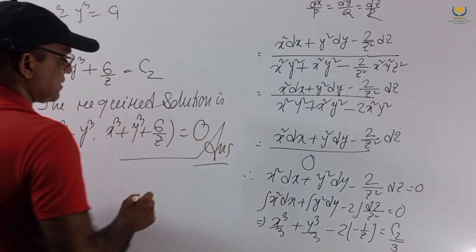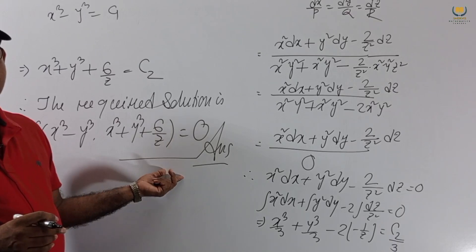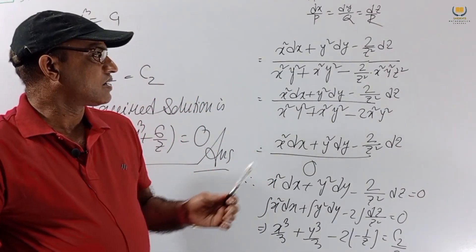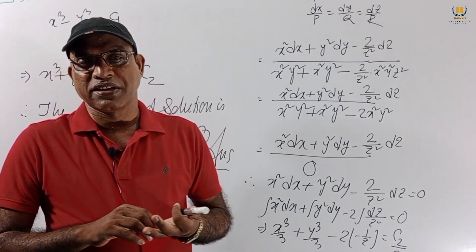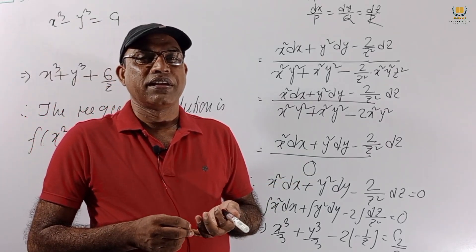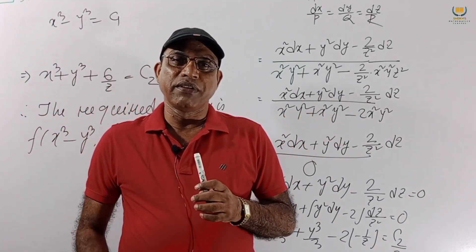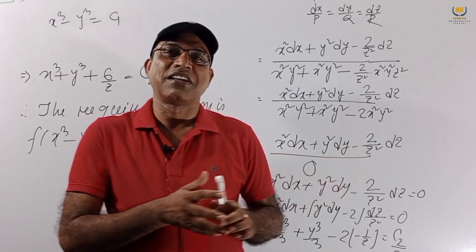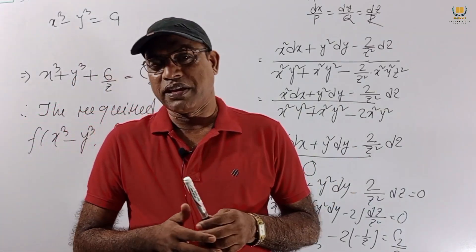And this is our answer: F(X³ minus Y³, X³ plus Y³ plus 6/Z) equal to 0. Very easy, very interesting, and very important also. These are important for B.Tech and any engineering courses, whether first, second, or third semester. I hope you are all enjoying. Please share this video with your friends, like this video, and click the bell icon. Thank you.